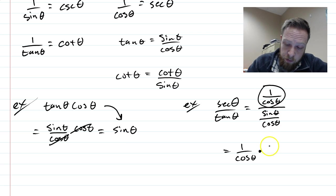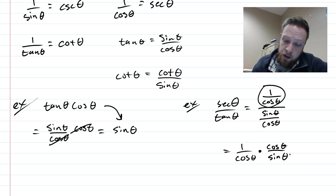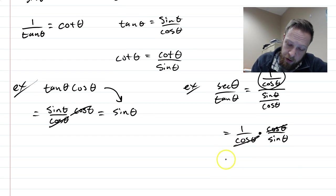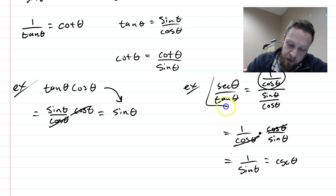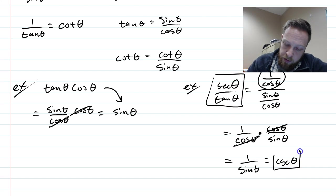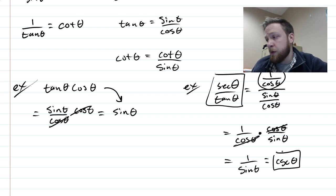So now that we've written it that way, we can do the keep switch flip. We keep 1 over cos θ, we change it to multiplication, and then we multiply by the reciprocal of the downstairs. So instead of sin over cos, you're going to multiply by cos θ all over sin θ. The cosines are going to cancel, so we have 1 over sin θ. And 1 over sin θ, you could simply write as csc θ. That's the simplified form.